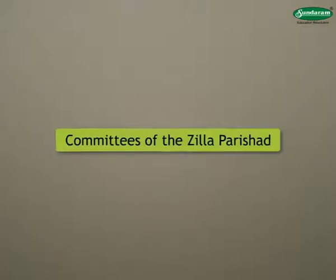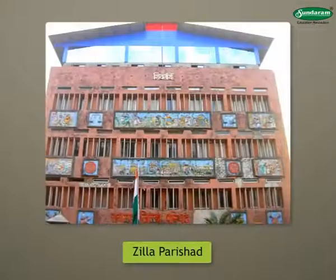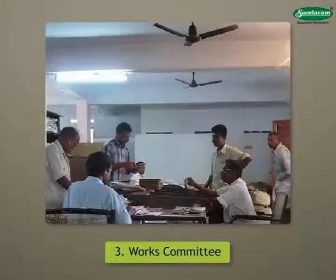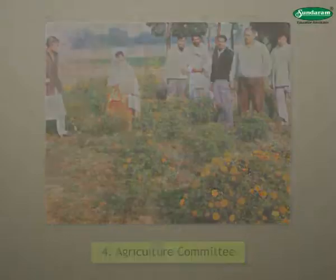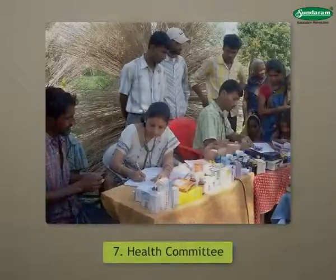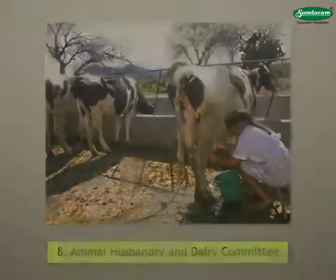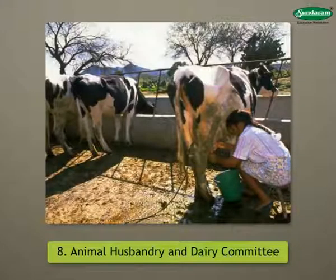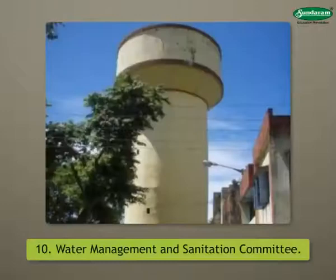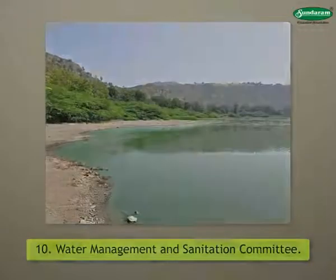There are different committees to implement the various development schemes at the district level effectively. In all, a Zilla Parishad has 10 committees: 1. Standing Committee, 2. Finance Committee, 3. Works Committee, 4. Agriculture Committee, 5. Social Welfare Committee, 6. Education Committee, 7. Health Committee, 8. Animal Husbandry and Dairy Committee, 9. Women and Child Welfare Committee, 10. Water Management and Sanitation Committee.